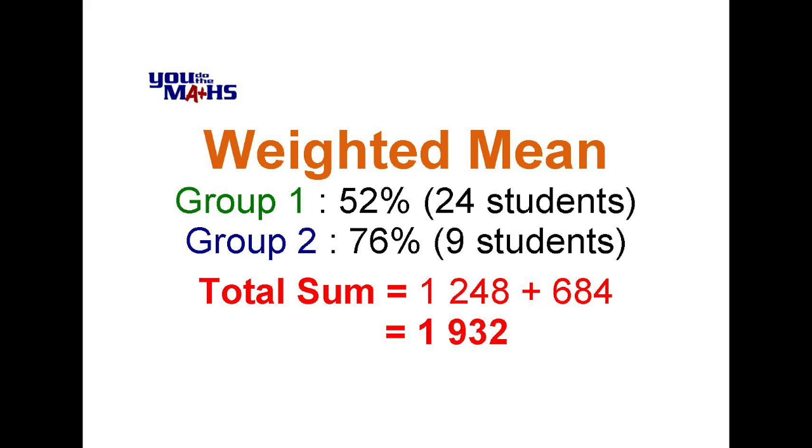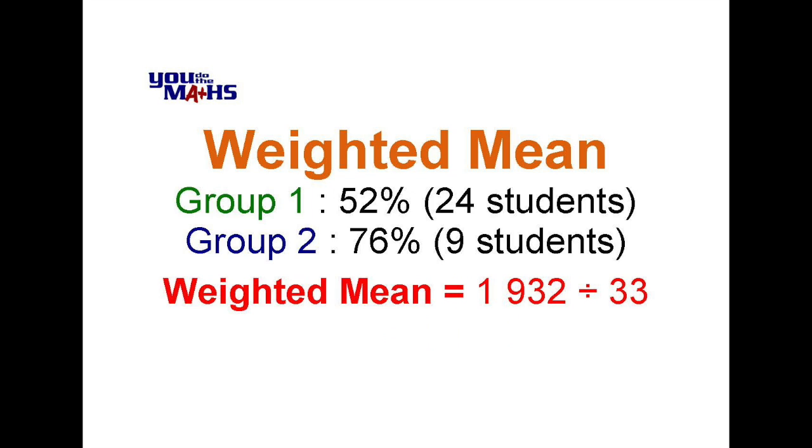We've got the total number of scores, or in this case students, which is 33, so we can divide 1932 by 33, and that gives us a weighted mean of approximately 58.55. And you'll notice, as expected, that weighted mean is closer to 52 than it is to 76, and that should be the case because group one has more scores in it, so it should dominate and the weighted mean should be closer to the mean for group one.